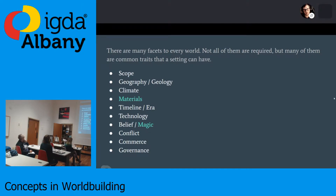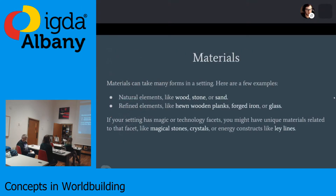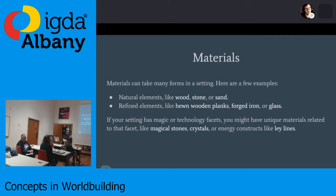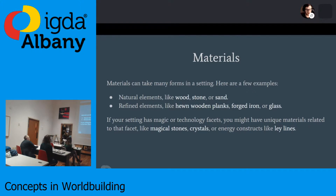The two facets I want to talk about are materials and magic. For materials, there are a lot of forms a material can take in a setting — natural elements, refined elements, and some that might be very specific to your setting, like a particular magical stone or something of that nature. A lot of these materials tend to depend on your geography, but there are always exceptions to the rule.